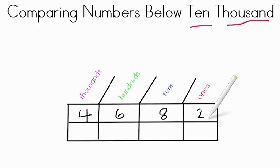In the ones, we have two ones, eight tens, six hundreds, and four thousands. Thousands being the biggest number, ones being the smallest amount.